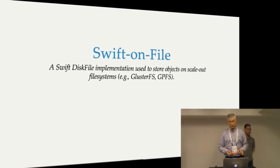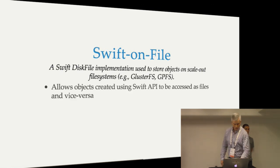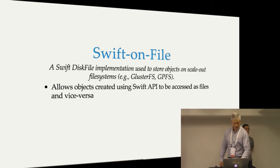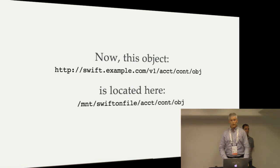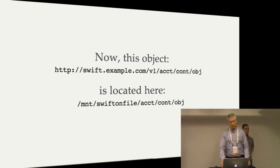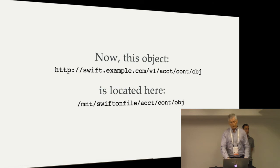Swift on File gives us a way to get to that data in an easy way. Swift on File is a disk file implementation used to store objects in a scale-out file system and make them available from the file system as well as from the user interface. It allows creating objects with the Swift API and then accessing them through the file system API, or vice versa. It maps a URL to a file system path and is deployed as a storage policy. With Swift on File, the object is located in a much more human-interpretable, easy-to-access way so that applications can access objects directly through the file interface or through the REST API.